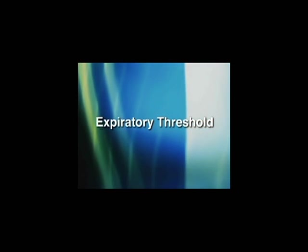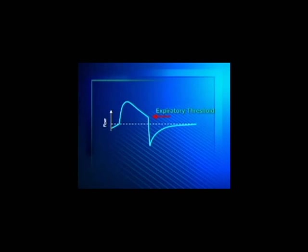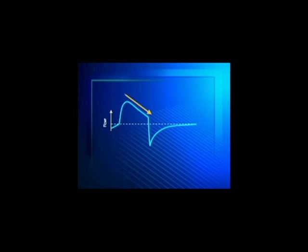Expiratory threshold. The expiratory threshold setting determines the percent of peak flow at which pressure support breaths will cycle to exhalation. Since the rate of flow decay during pressure support breaths is influenced by the patient's pulmonary time constant, the patient's pulmonary time constant will impact breath cycling off timing.